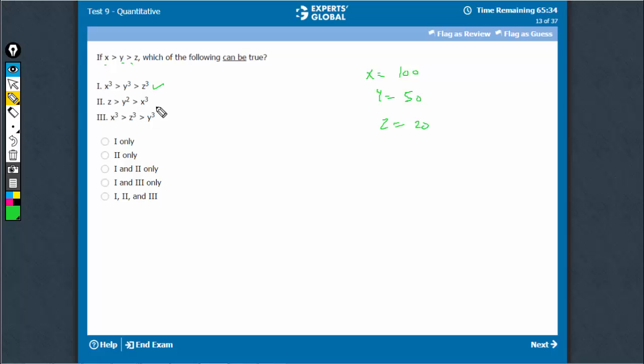Come to statement 2. This is possible when the values of x, y and z are small fractions between 0 and 1. For example, x is equal to 0.9, y is equal to say 0.89 and z is equal to 0.88.